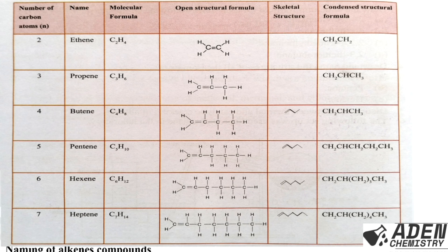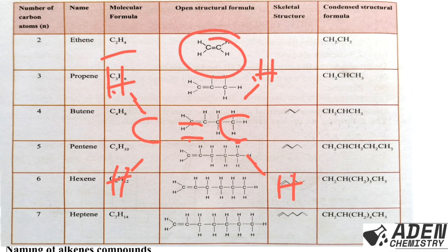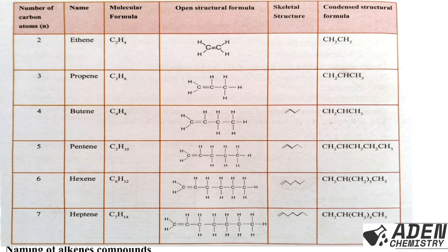Now let's look at the open structural formula. For ethene, I have only two carbon atoms with a double bond in between them. Each carbon must have four bonds total. After accounting for the double bond, each carbon has two remaining bonds filled with hydrogen, giving C2H4. That's how you write the open structural formula for ethene.